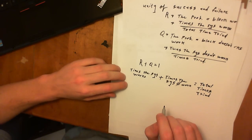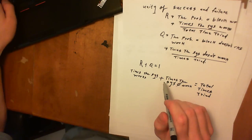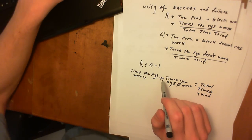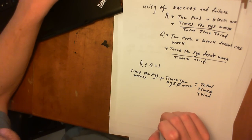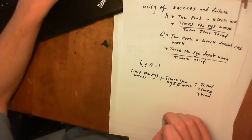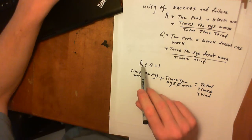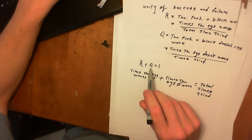In the book Reliability Evaluation of Engineering Systems by Roy Billinton, Q is called the probability of failure. So we can call R the success probability and Q the failure probability.